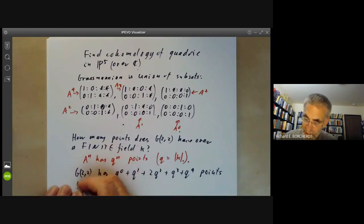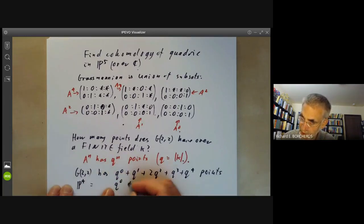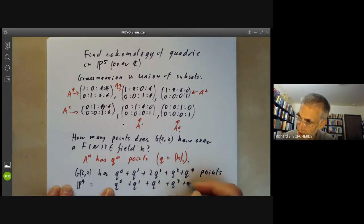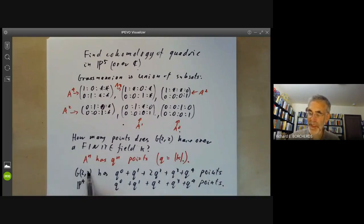If you want to compare this with four dimensional projective space this has q to the 0 plus q to the 1 plus q squared plus q cubed plus q to the four points. So we see that the Grassmannian G2,2 is definitely different from four dimensional projective space. It's either got a different number of points over a finite field or it's got different cohomology groups if you work over the complex numbers.